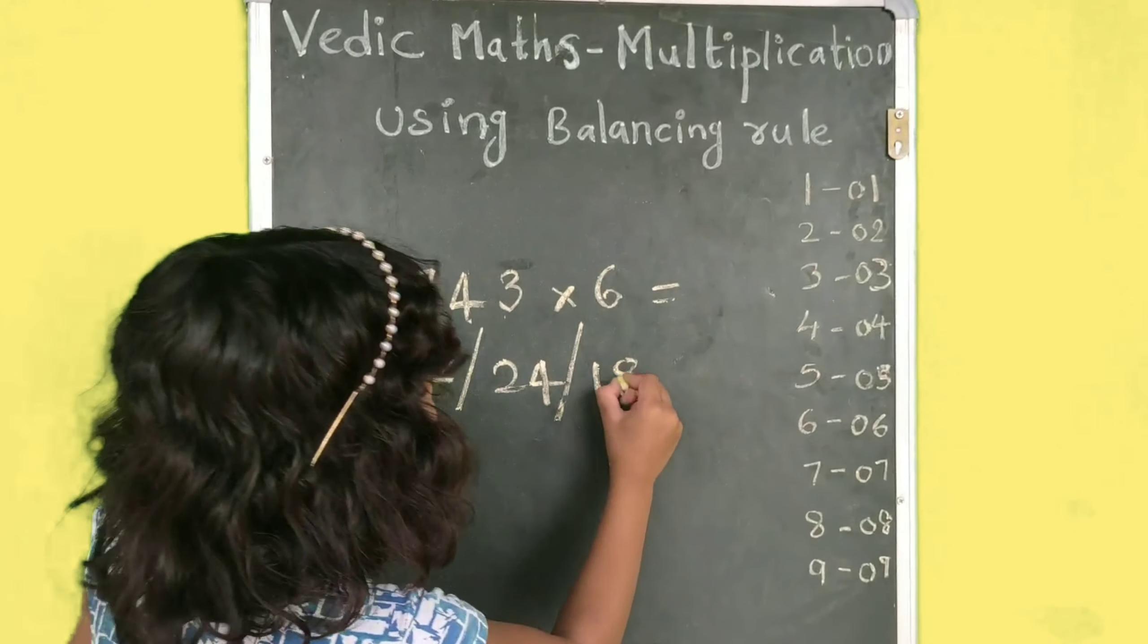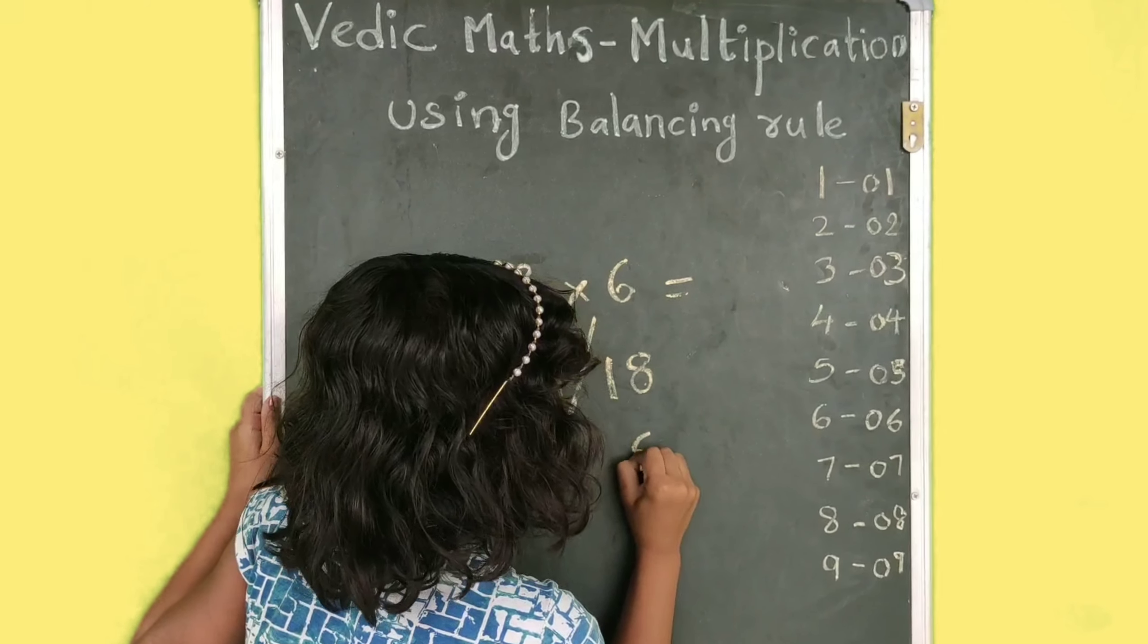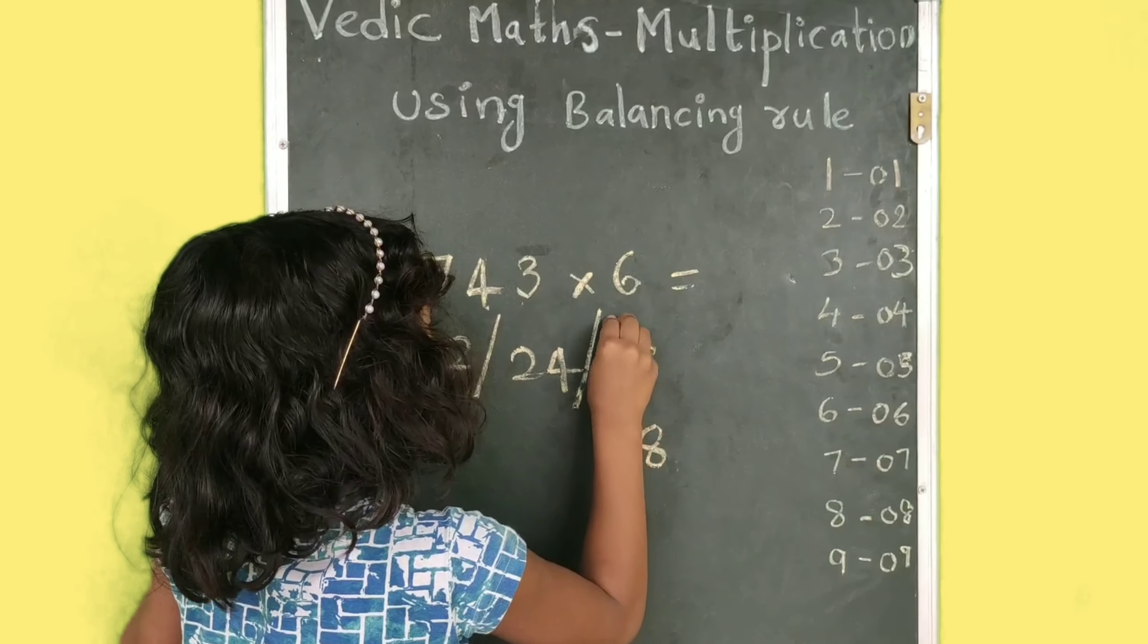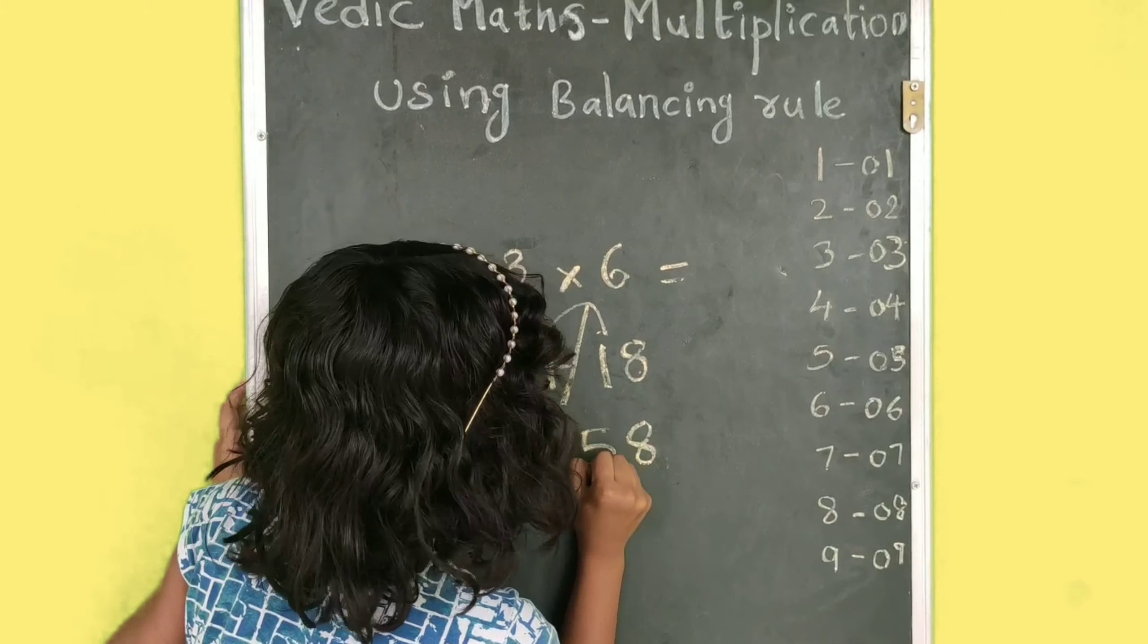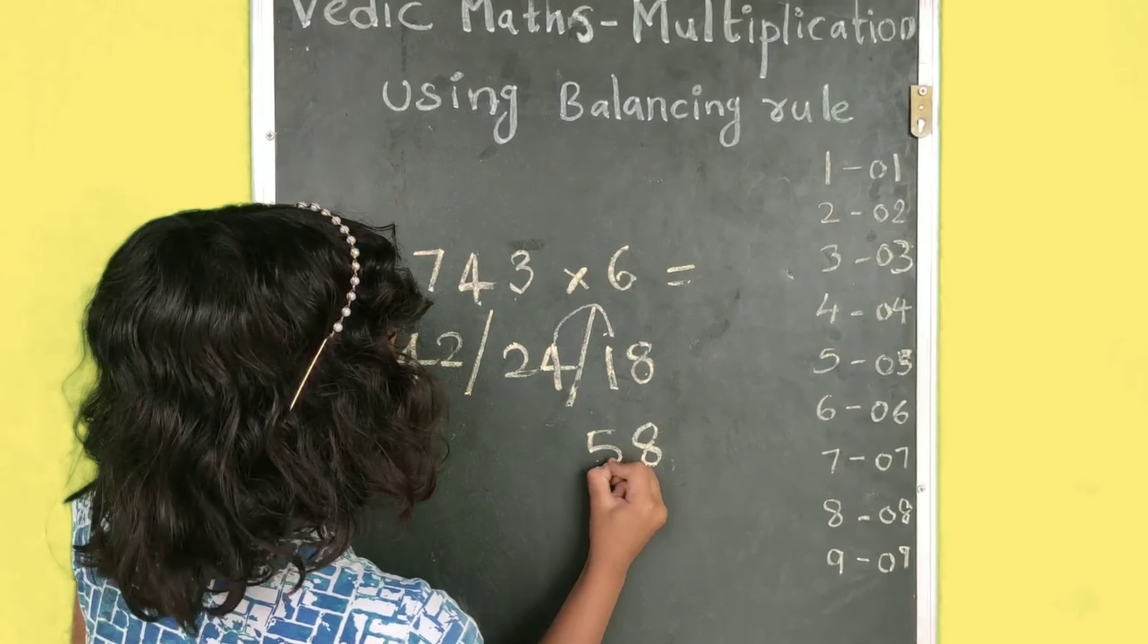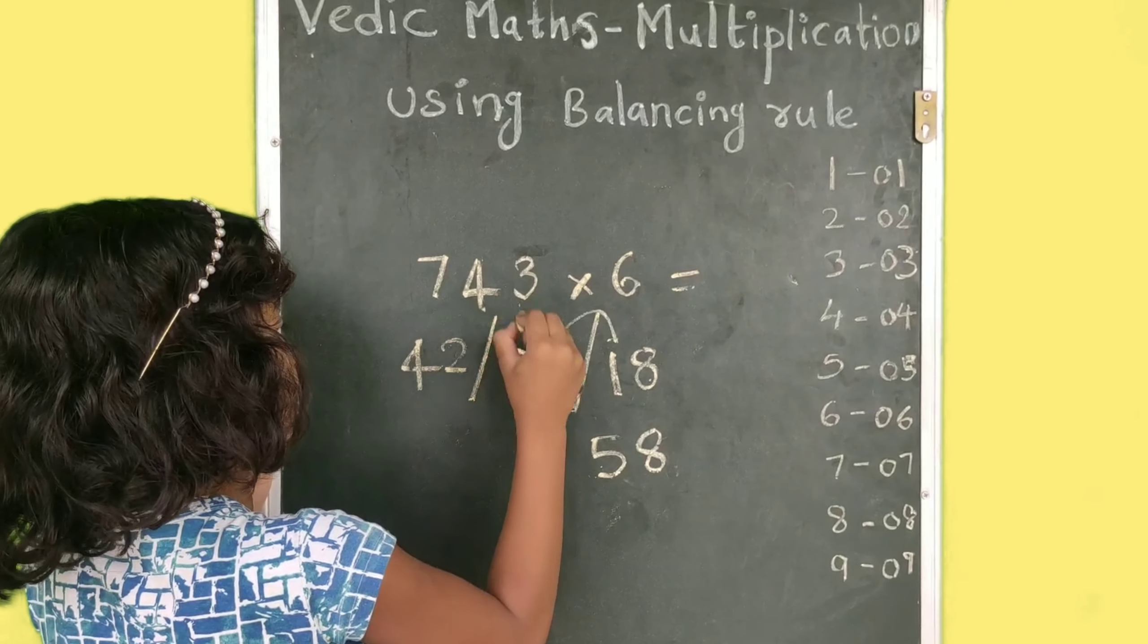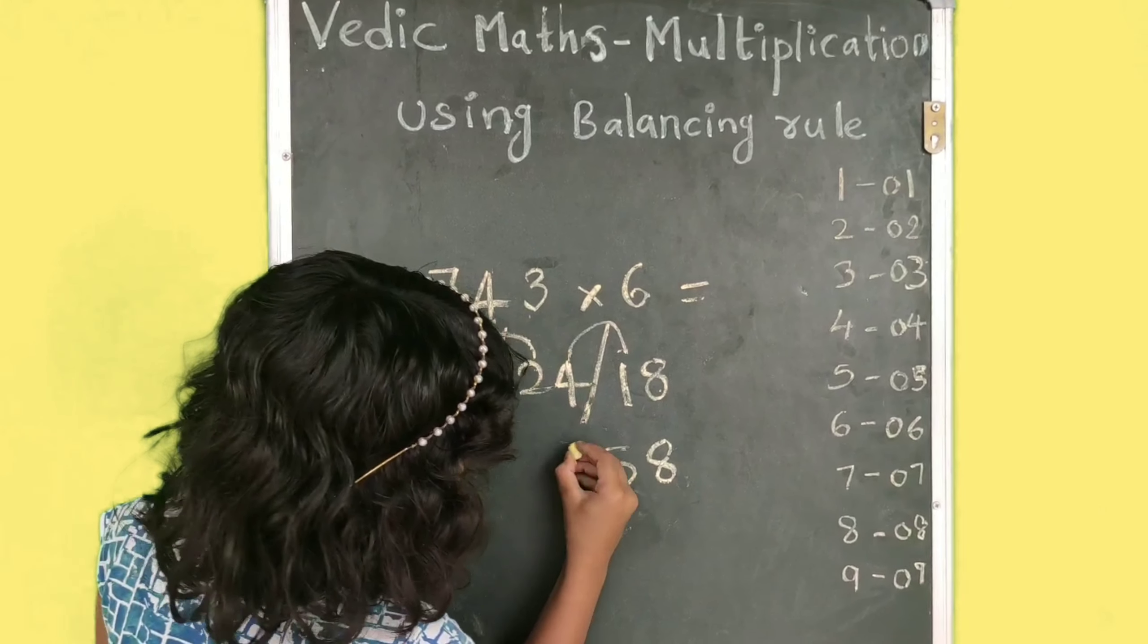Kipur, manam e8 ki 8 aalake bese kundhaan. E1 ni e4 ni plus chedhaan. 1 plus 4, 5. Kipur, manam e2 ni e2 ni plus chedhaan. 2 plus 2, 4.